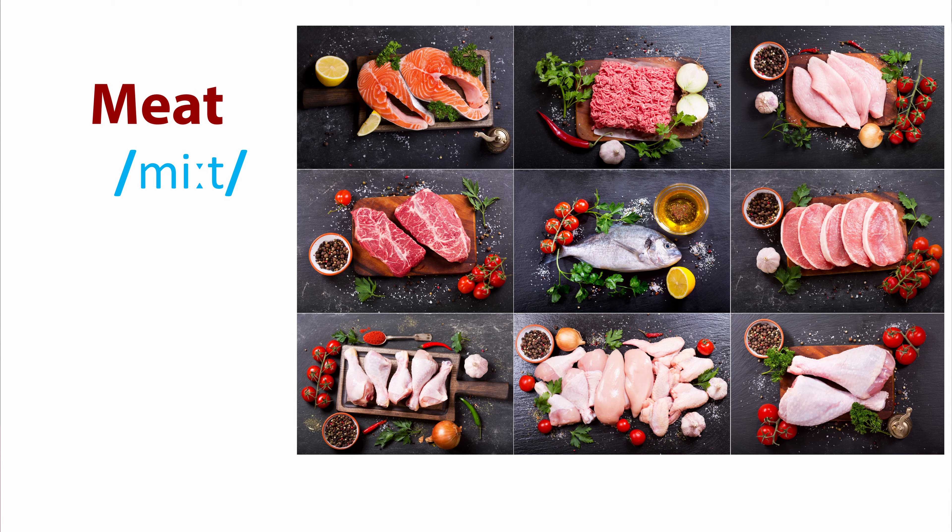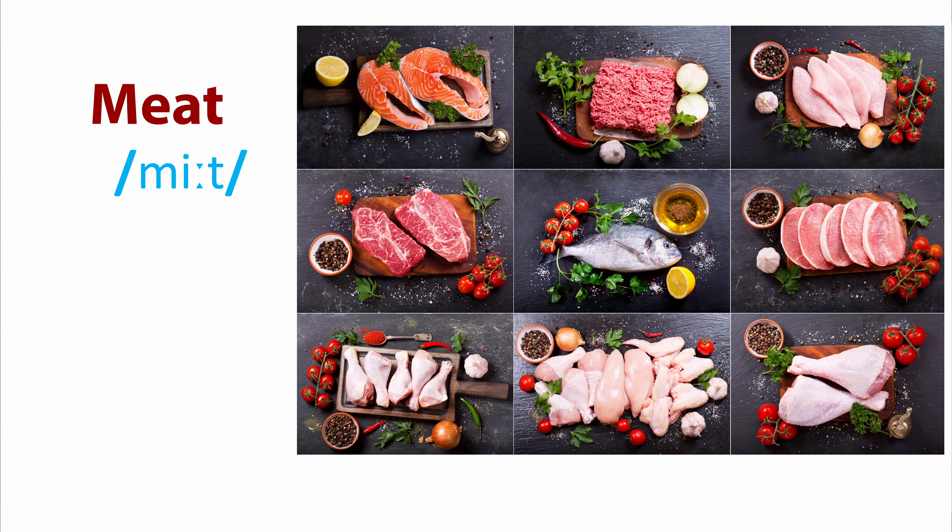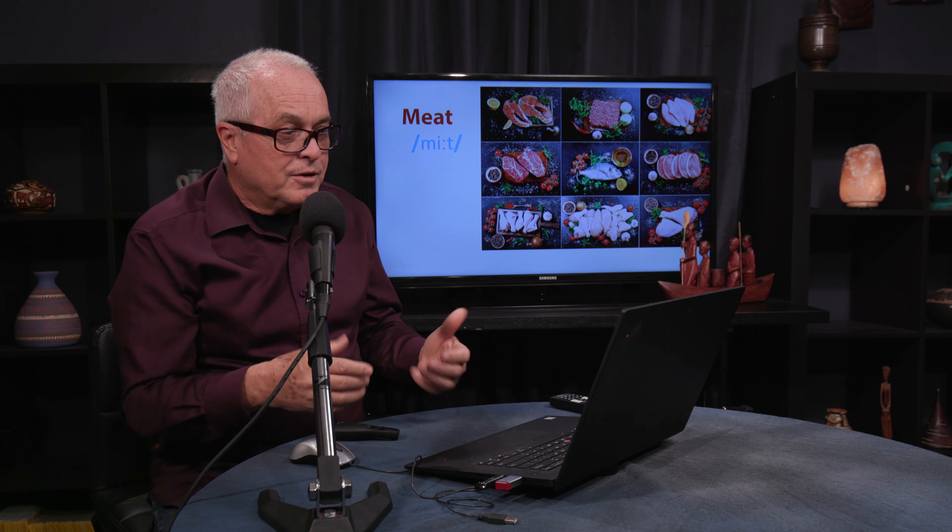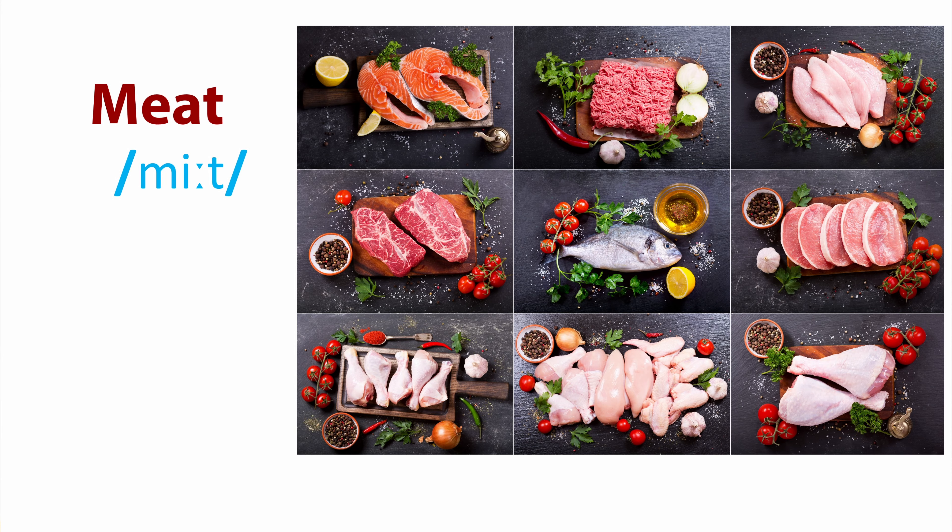Rather than talk about a food group in terms of nutritional value, we're going to talk more in terms of foods in their categories. The first food group we might talk about is meat. This is usually the flesh of animals that are slaughtered and prepared for food.